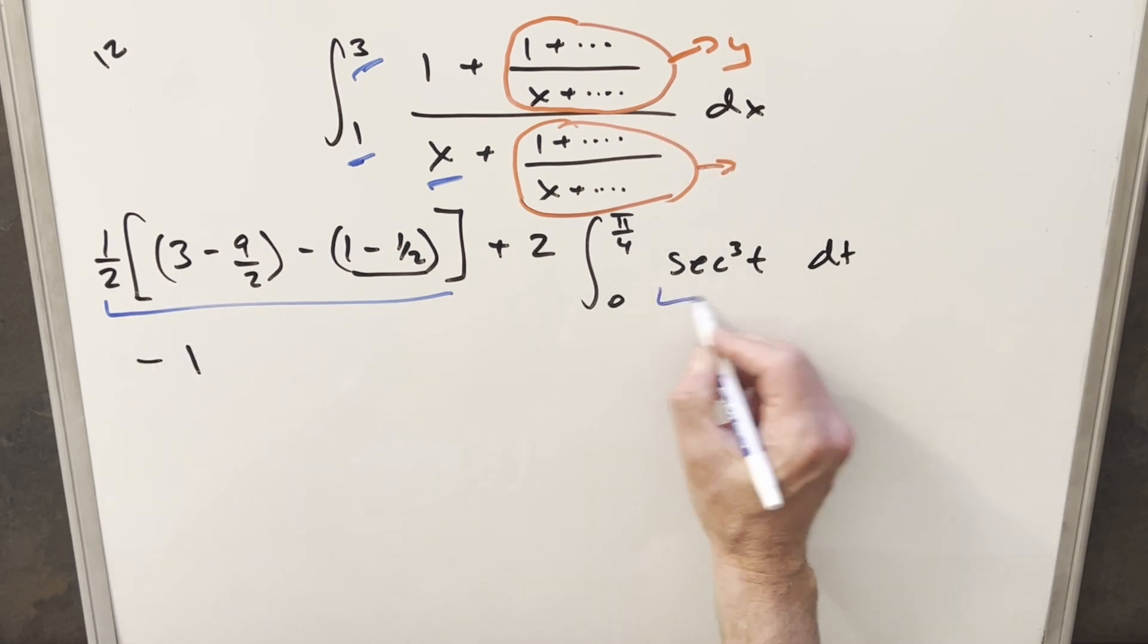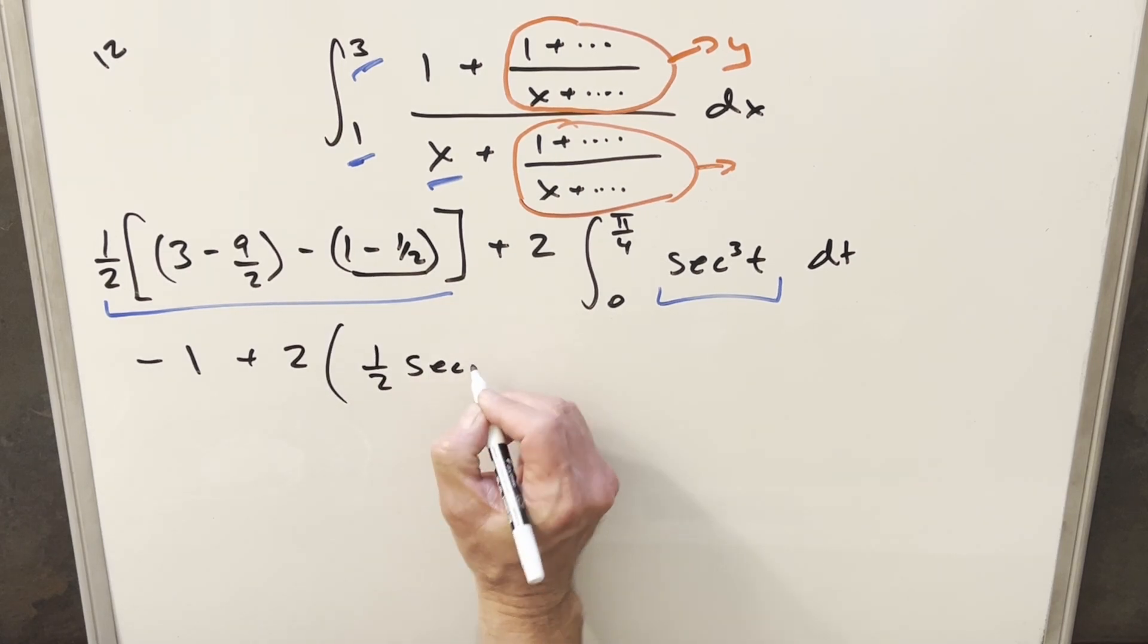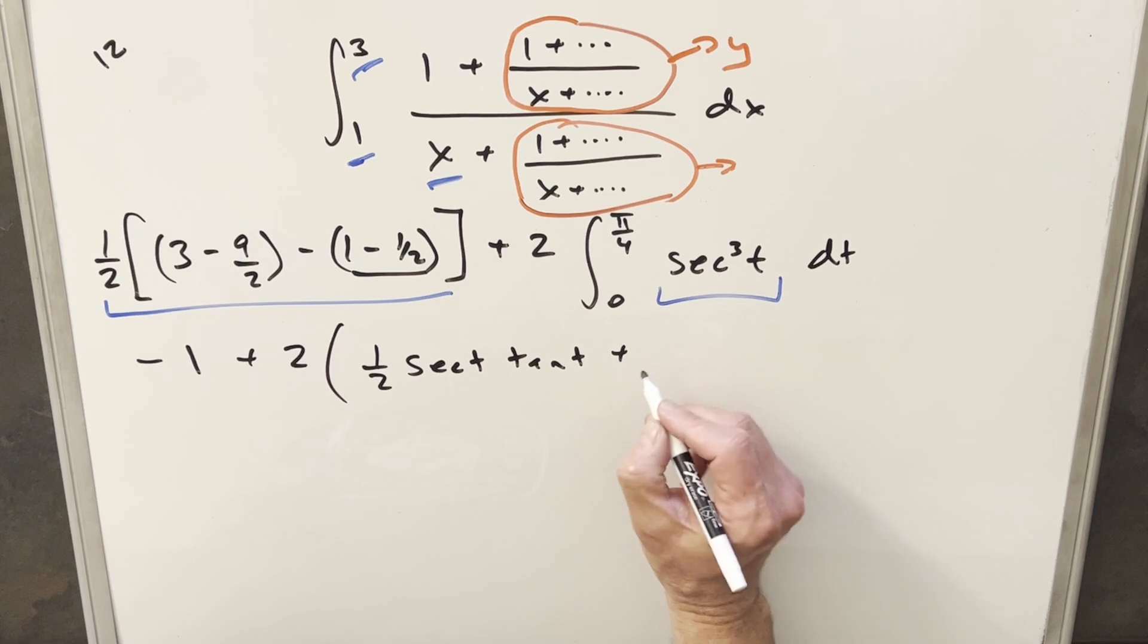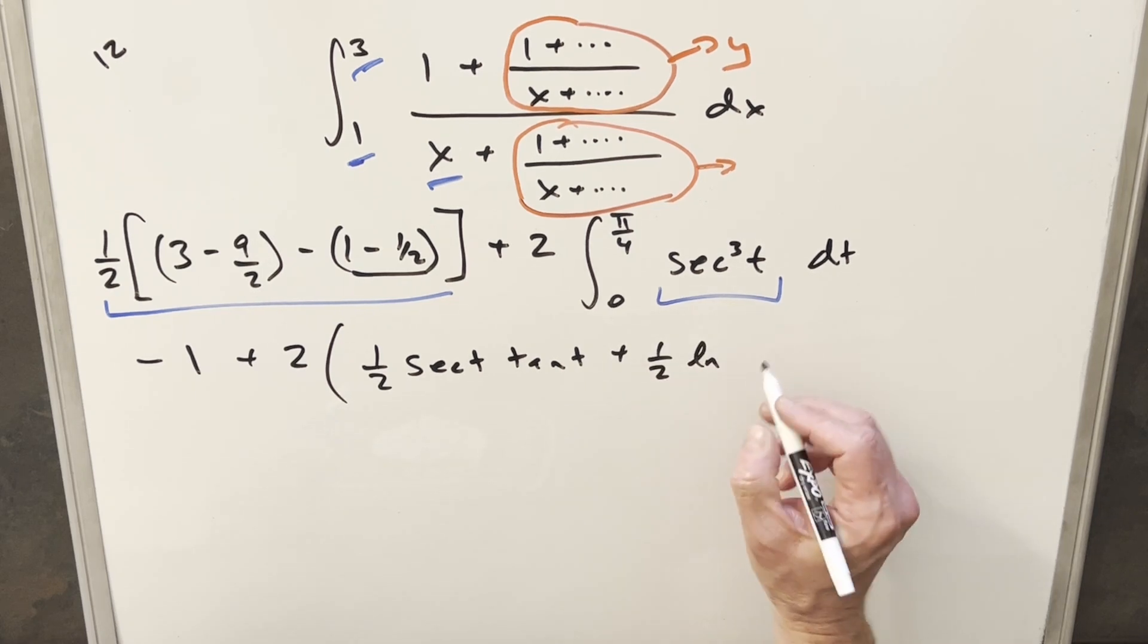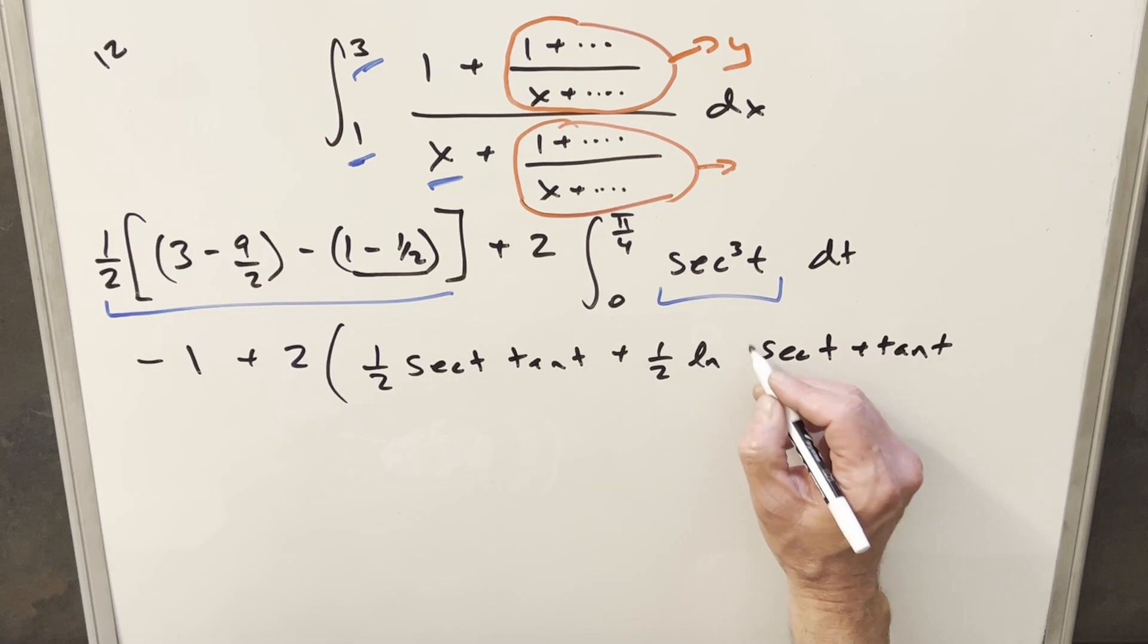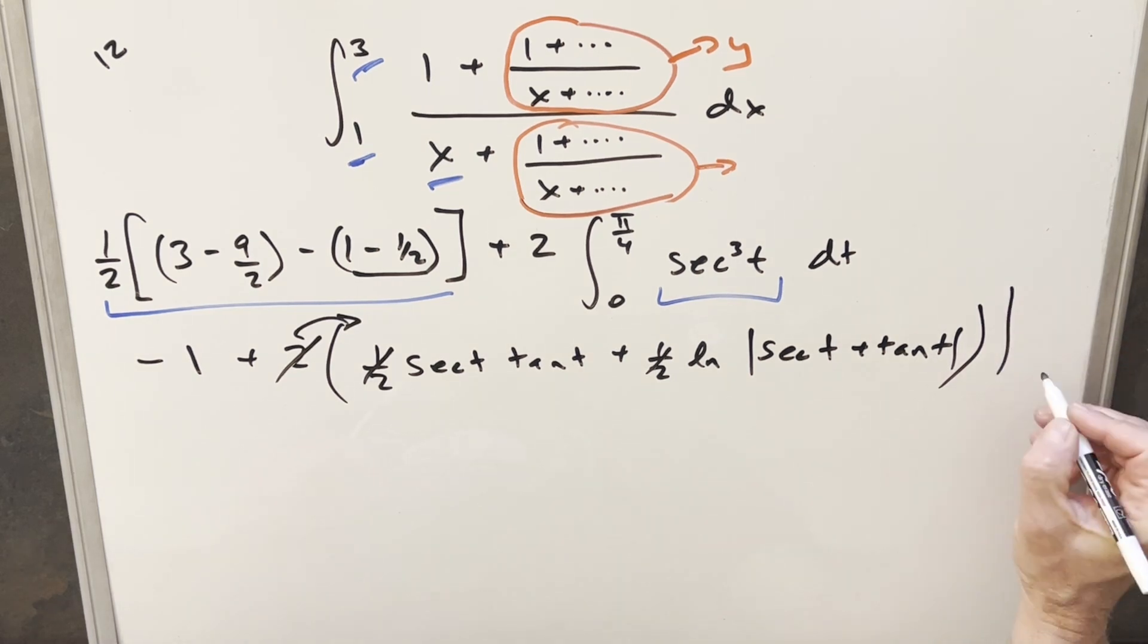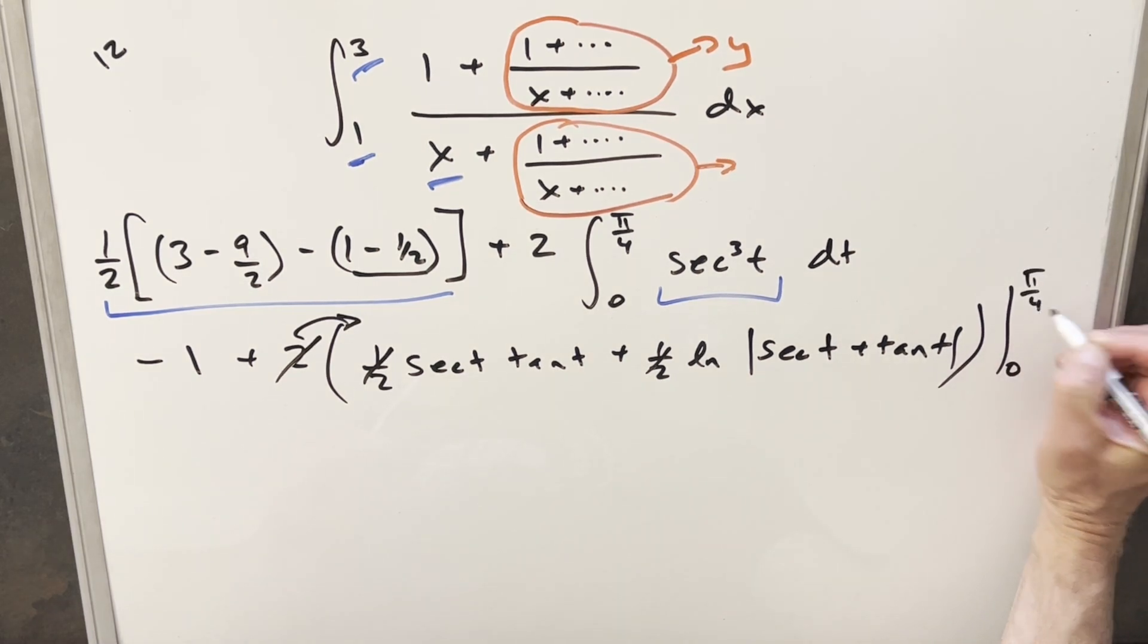So now at this point, we're just ready to integrate this thing. And I'm going to use a formula for this. Then we're going to have our plus 2 out front here. Now the formula for this is going to be 1 half secant times tangent. Plus we're going to have 1 half natural log secant t plus tan t. Like that. But then when we distribute in this 2, this is going to cancel with this and this. And this will cancel out here. But we just need to evaluate this from 0 to pi over 4.